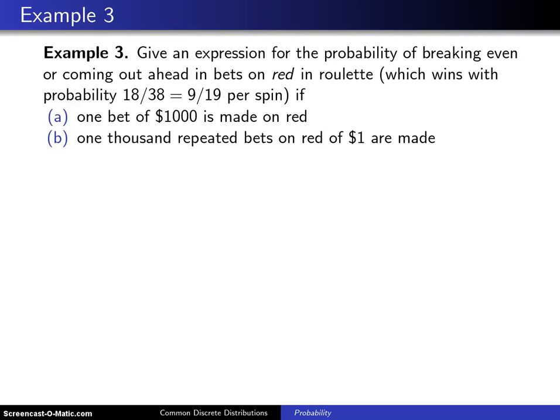Give an expression for the probability of breaking even or coming out ahead in bets on red in roulette, which wins with probability 18 out of 38, which in lowest terms is 9/19 per spin.